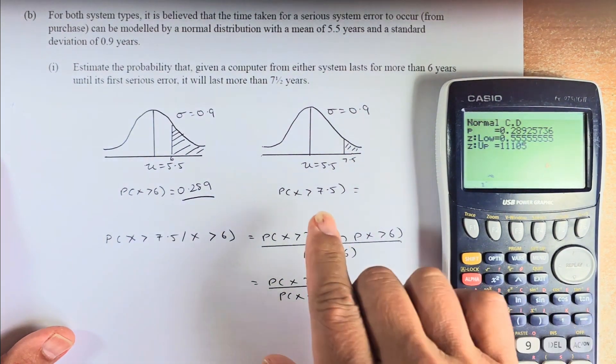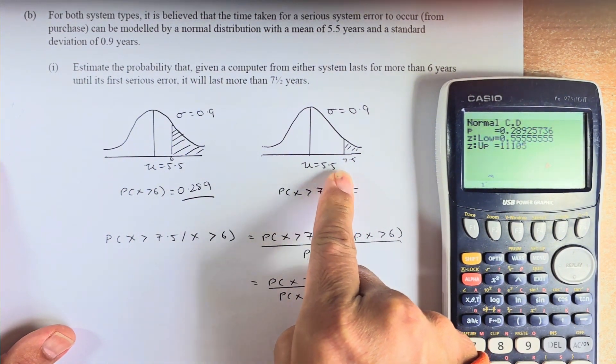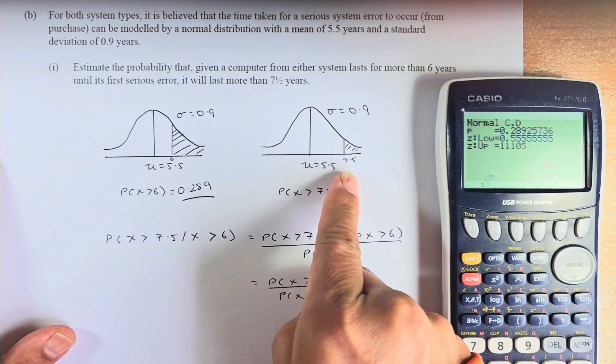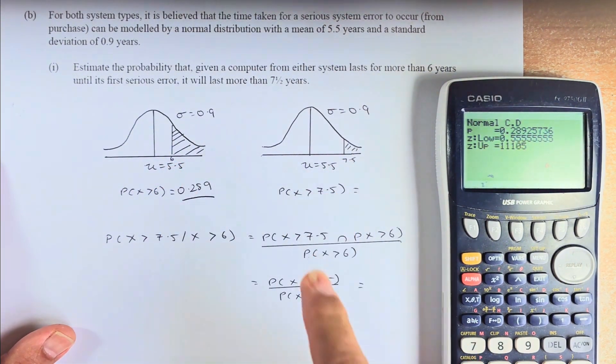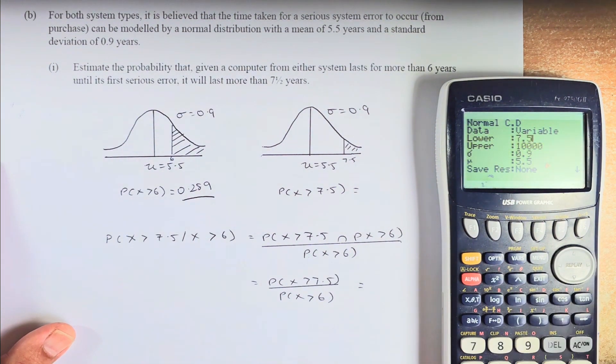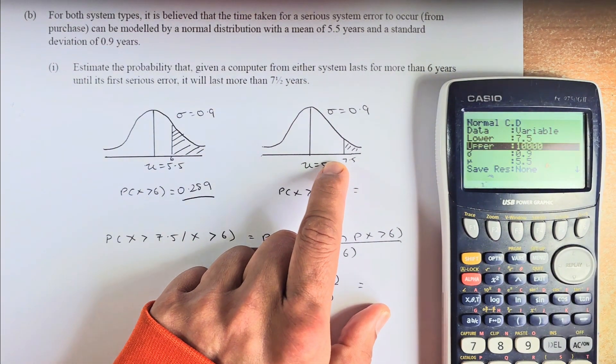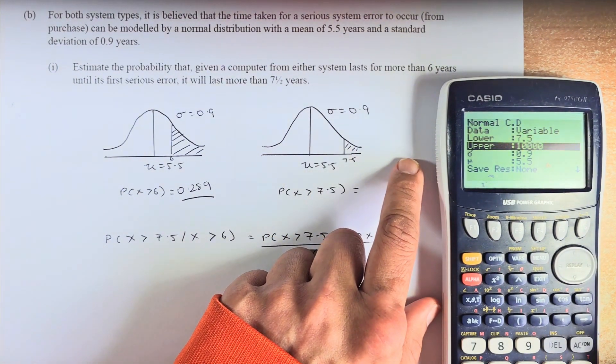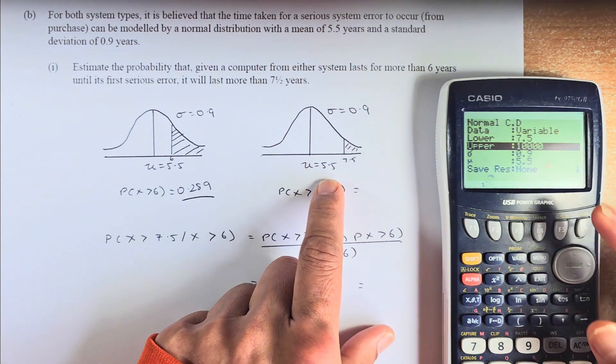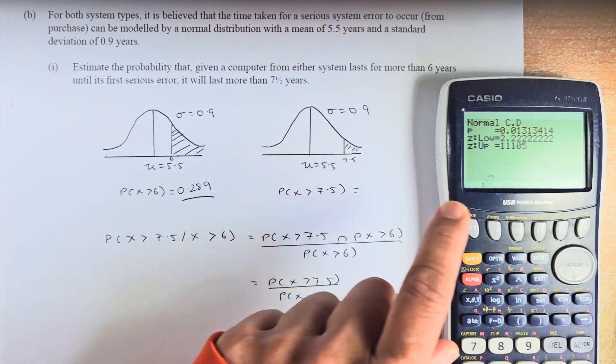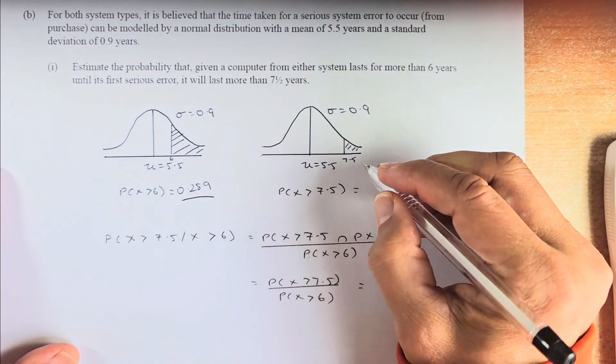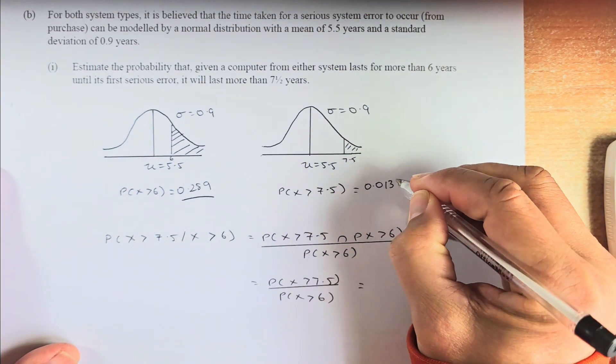Now to calculate the second part, which is 7.5, is the same. All the numbers are the same except the X value. Instead of 6 is replaced by 7.5. We are going to exit and then we are just going to change 7.5 because that is the lower. The upper is still going to be a big number, 10,000 or 20 million. Sigma is still the same, 0.9. Mean is 5.5. Execute. And the answer is 0.0131.